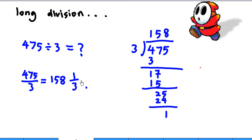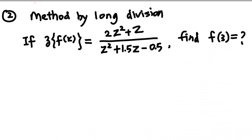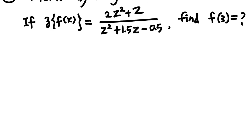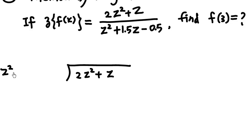We can apply this to find the inverse Z-transform. Here is an illustration: the Z-transform of f(k) equals (2Z squared plus Z) over (Z squared plus 1.5Z minus 0.5). I want to find the value of f(3). Let's proceed to do the long division: I have 2Z squared plus Z divided by Z squared plus 1.5Z minus 0.5.